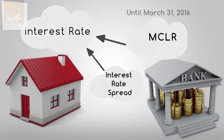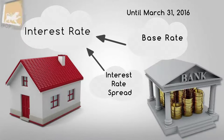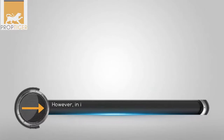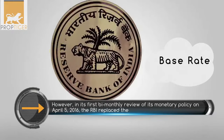Until March 31, 2016, the first component was the base rate — the benchmark rate below which a bank would not lend to its customers. However, in its first bi-monthly review of its monetary policy on April 5, 2016, the Reserve Bank of India replaced the base rate with MCLR.